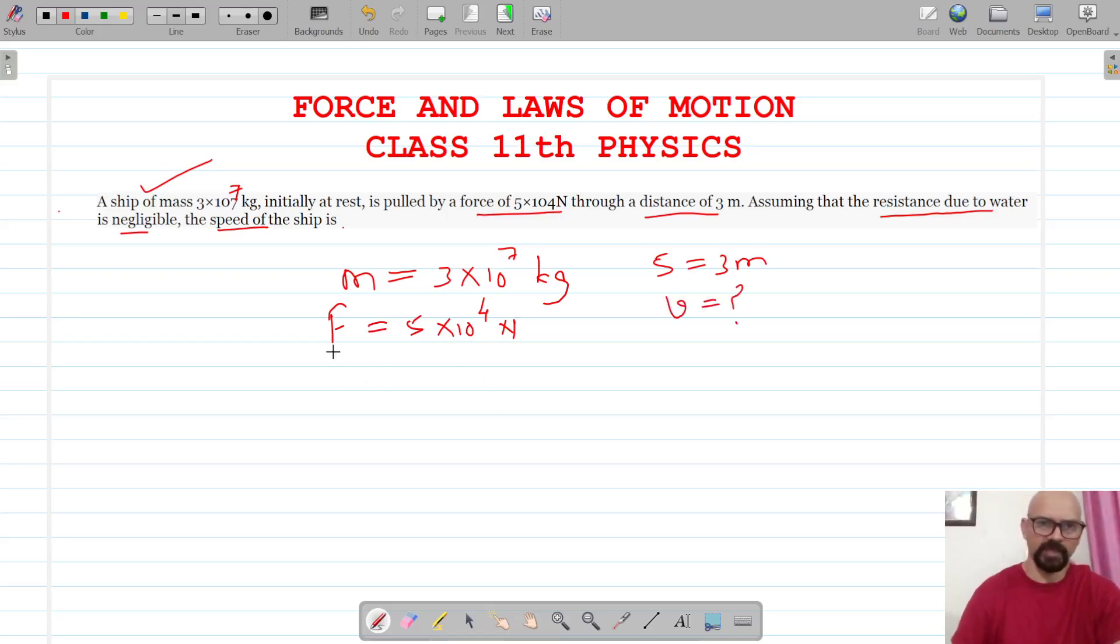Now, from Newton's second law of motion, let's calculate the acceleration. That would be force divided by mass: (5×10^4) / (3×10^7), which gives 5/3 × 10^-3 m/s².